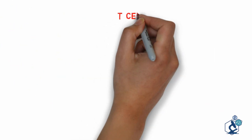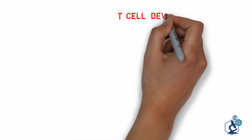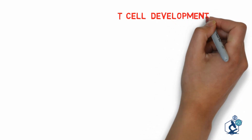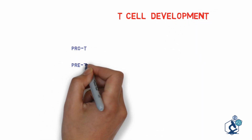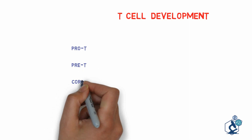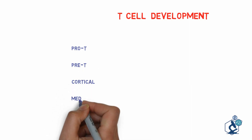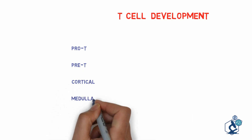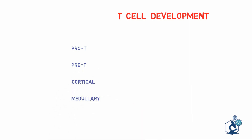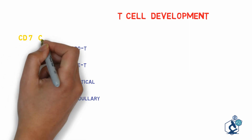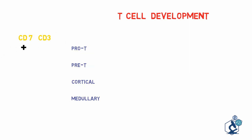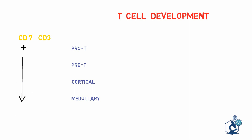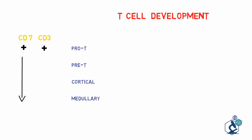Let's quickly summarize what we have learned. There are four stages of T cell development. Pan T cell markers are CD7 and CD3. CD3 moves to the surface at the medullary stage.